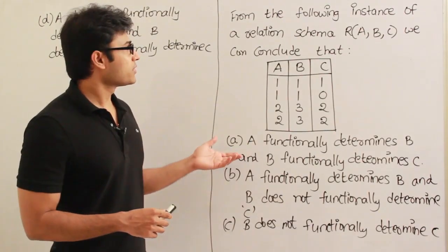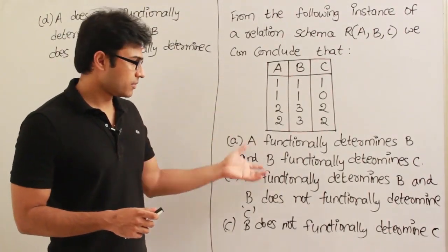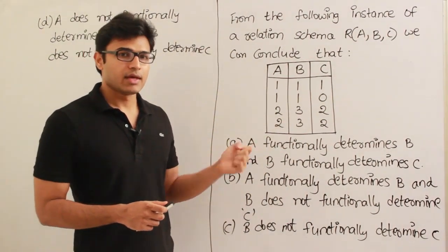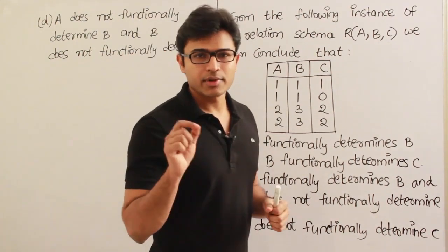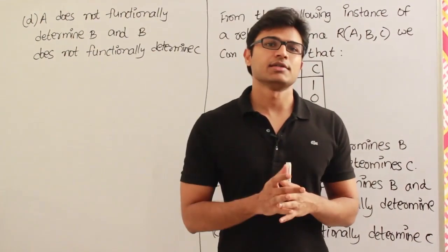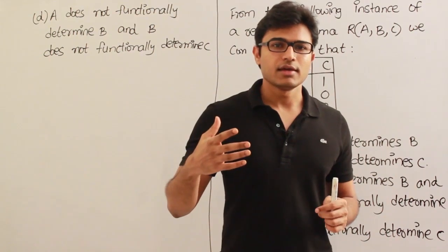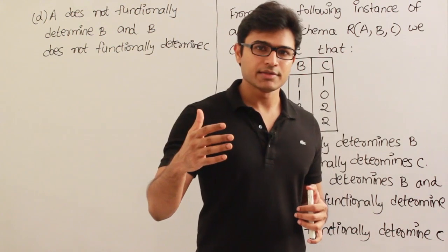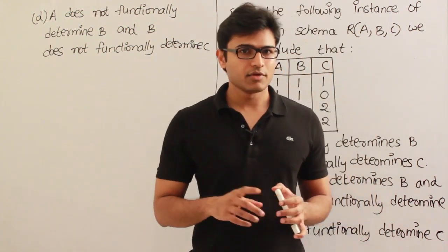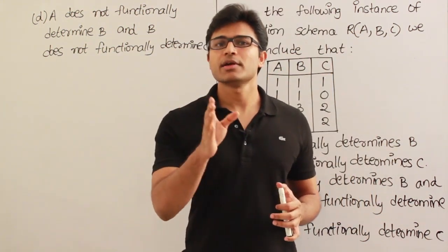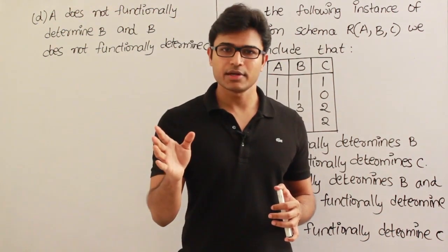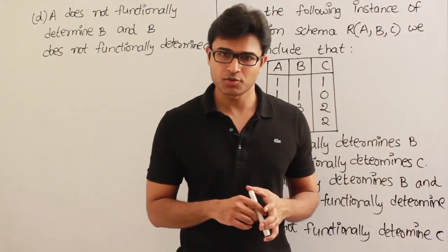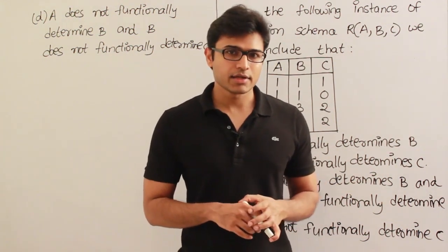I have already done this question earlier but I have rewritten it because the wording is very important. Whenever I say A determines B or B determines C, if such a functional dependency is given, it is assumed that the particular functional dependency holds everywhere in the database. If A determines B is there as a functional dependency, it must hold true everywhere for every new insertion or updation you are going to do.